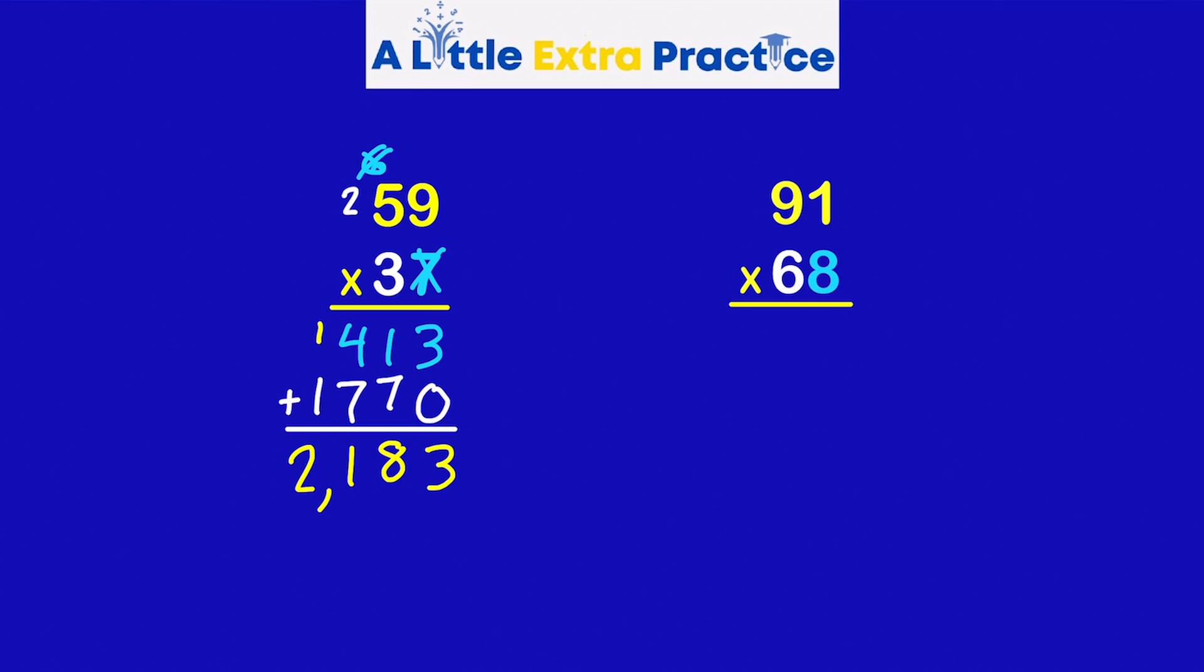Moving on. 91 times 68. Look at the ones place. There's an 8 in the ones place of the bottom number. 8 times 1 is 8. 8 times 9 is 72.